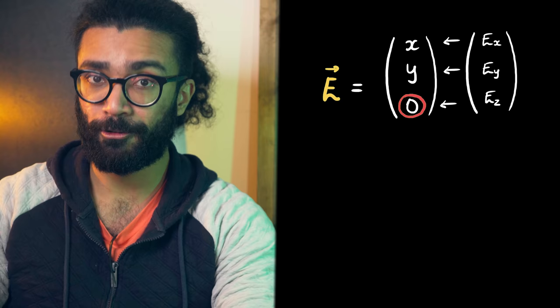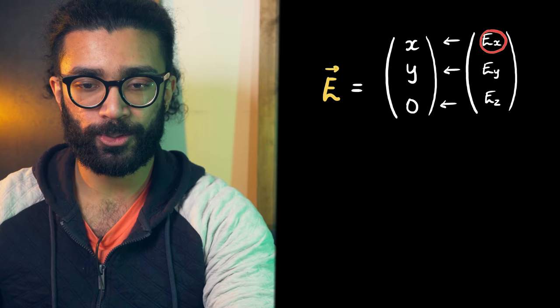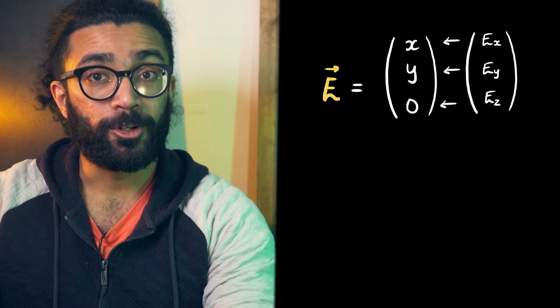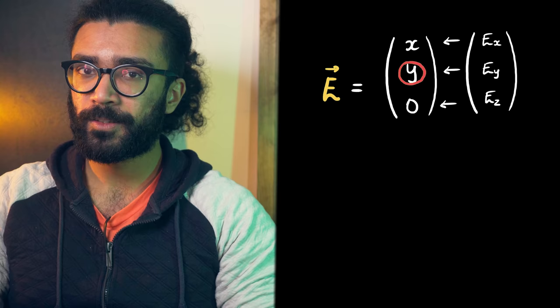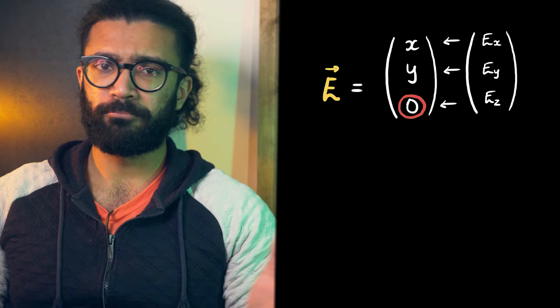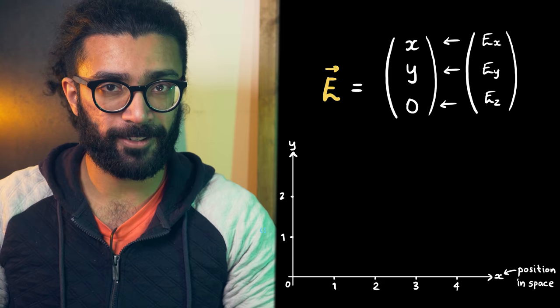All this is saying is that the component of the vector field in the z direction is 0 at every point. The component of the field in the x direction is equal to the x coordinate at that point, and the same is true for y. Now note that this x and y doesn't mean the x and y component. That information is implied by where we write the formula. Anything written here is the x component of the field, anything written here is the y component, and anything written here is the z component.